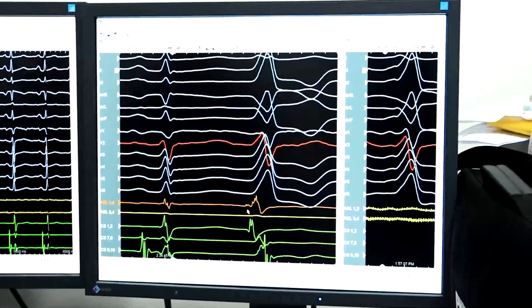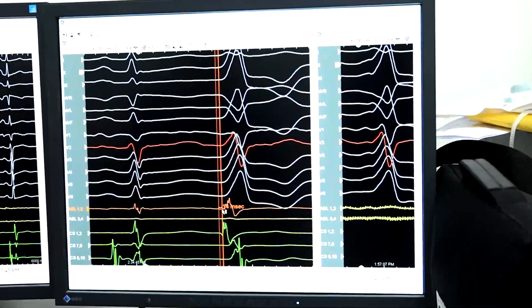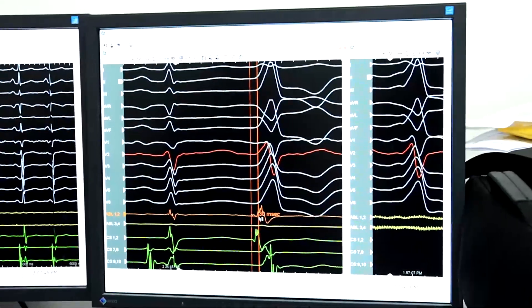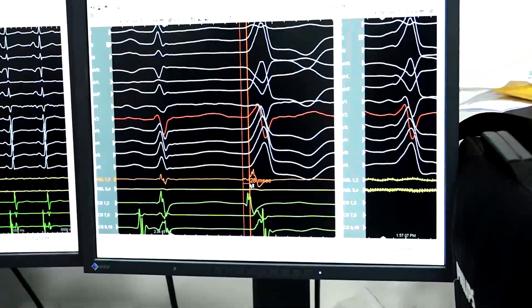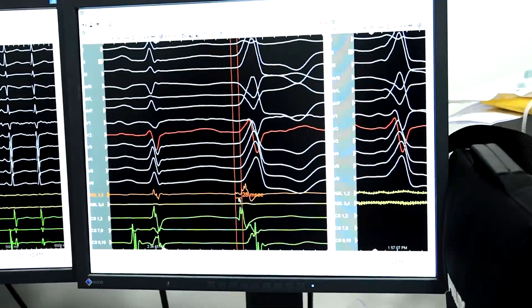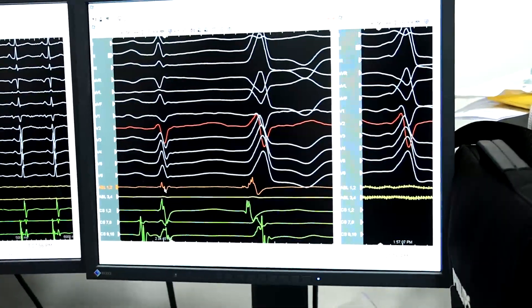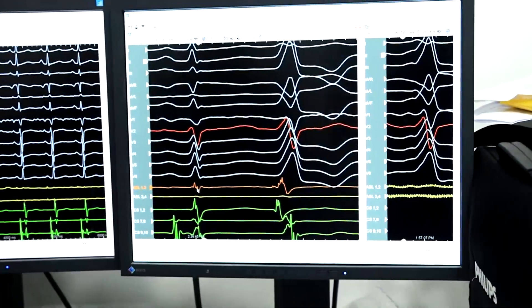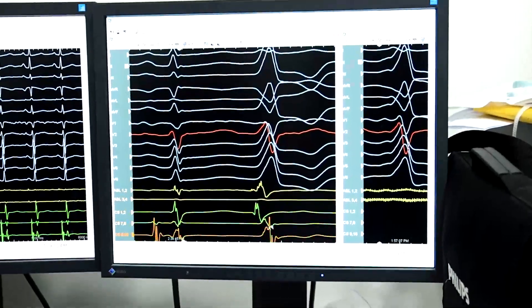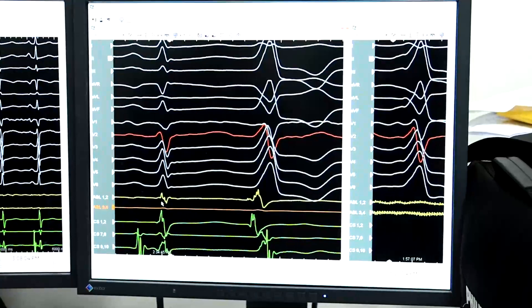Seeing such a location at the commissure between the right coronary cusp and left coronary cusp, we got a nice potential that precedes even the coronary catheter and precedes the QRS complex by about 28 milliseconds. And even the sinus electrogram showing a very sharp potential representing a myocardial sleeve here.